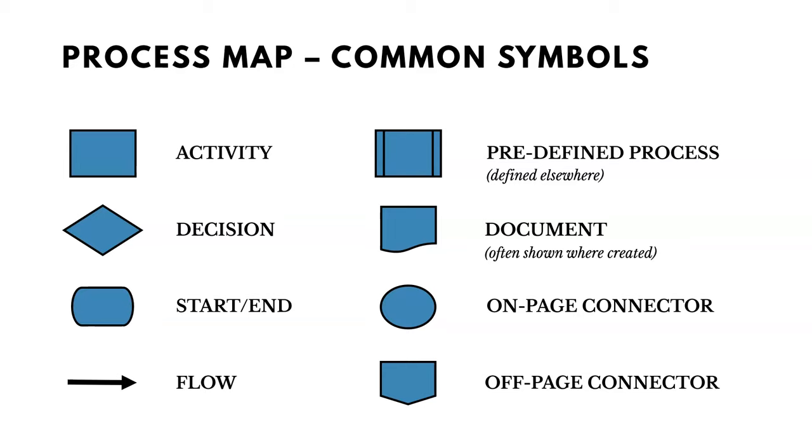Now the symbol in the top right is a predefined process. So let's say we draw out our process map and we have a sub-process that's been included, or maybe a series of steps that we may not fit on the diagram or may not make sense to include. It's a process that's defined somewhere else, a predefined process or a sub-process. And the funny-looking symbol right below that is a document. We could show that when a document gets created in a process or updated, perhaps.